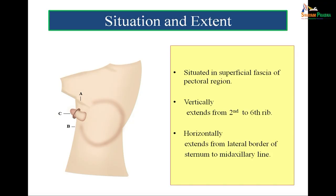We talk about the situation and extent of the breast. There is a vertical extent and a horizontal extent. Vertically, the breast extends from the second rib to the sixth rib, and horizontally it extends from the outer border of the sternum to the mid-axillary line. The anterior fold of axilla and the posterior fold of axilla lie posteriorly, and in between is the mid-axillary line. So from the lateral border of the sternum to the mid-axillary line is the lateral extent of the human breast.